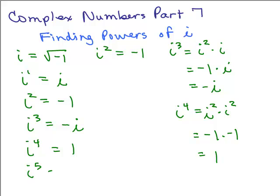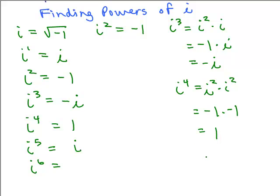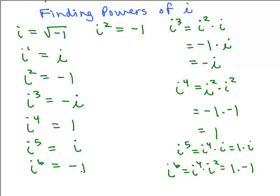How about i to the 5th? i to the 5th is just i to the 4th times i. i to the 4th is 1, so I'm back to i again. And this pattern just goes on indefinitely. i to the 6th is i to the 4th times i squared, so that's 1 times negative 1, which is negative 1. So the pattern goes: i, negative 1, negative i, 1, and then repeats: i, negative 1, negative i...